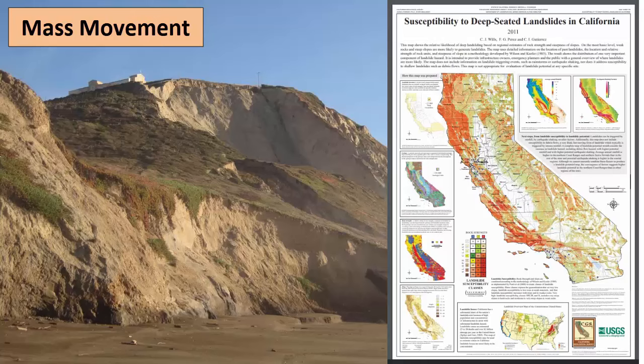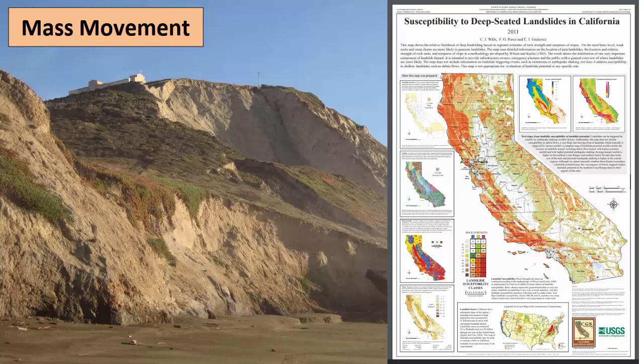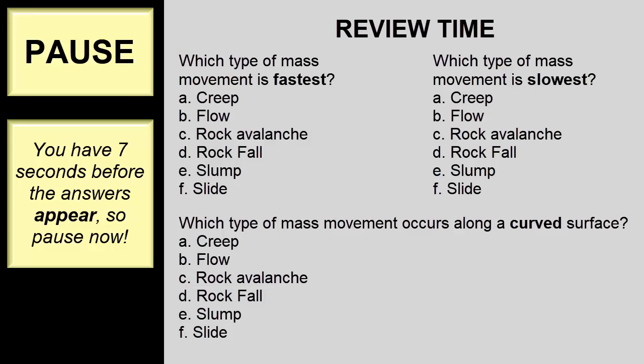In the state of California mass movements cause the greatest financial and human impact of any natural disaster. It's a good idea to pay attention to the stability of hillsides when building structures, communities, and hiking trails.